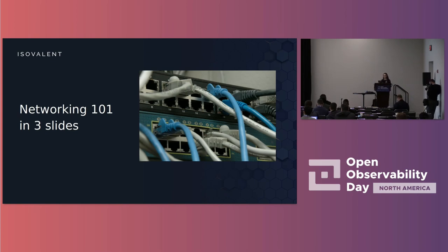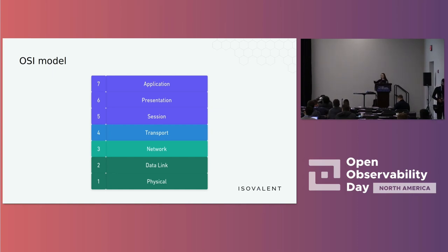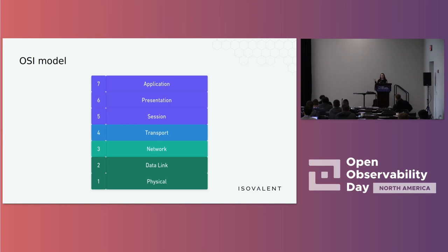Let's start with a quick networking 101 in three slides. It will be very basic, just to make sure that we are all on the same page and are using the same terminology. When people talk about computer networks they usually refer to the OSI model, and in this model there are seven layers from physical up to the application layer. Each layer builds on top of the layer below. Many people remember what layers 3, 4, and 7 are because these are very commonly used terms.